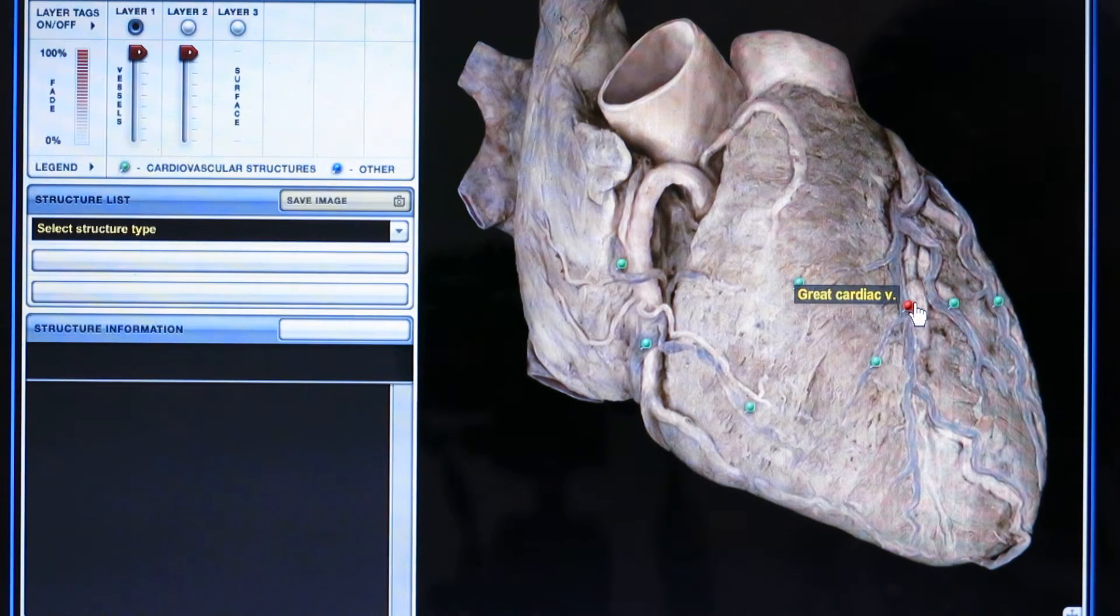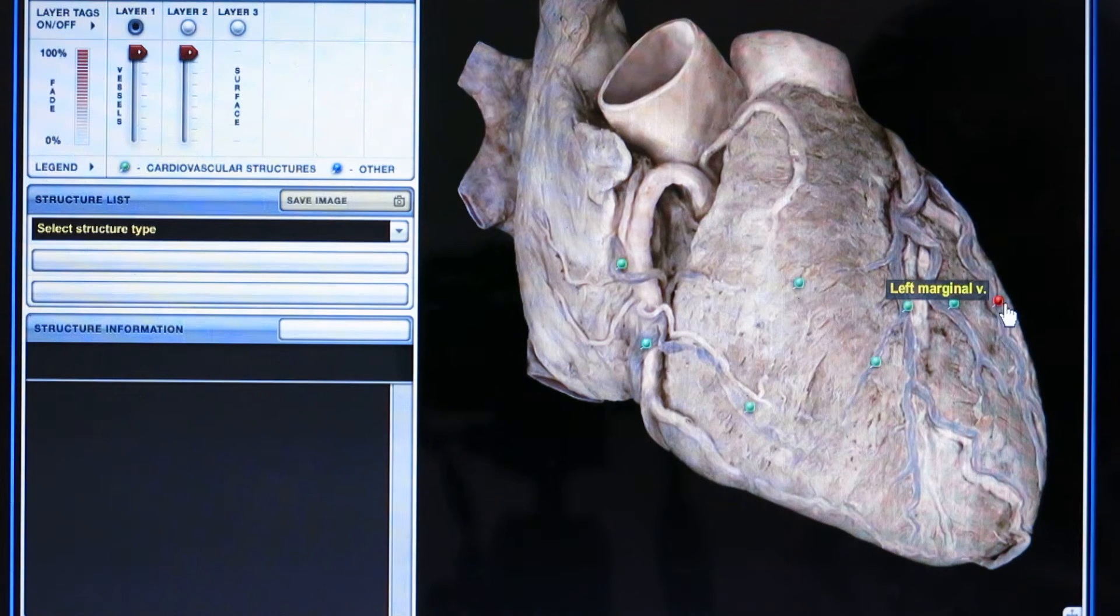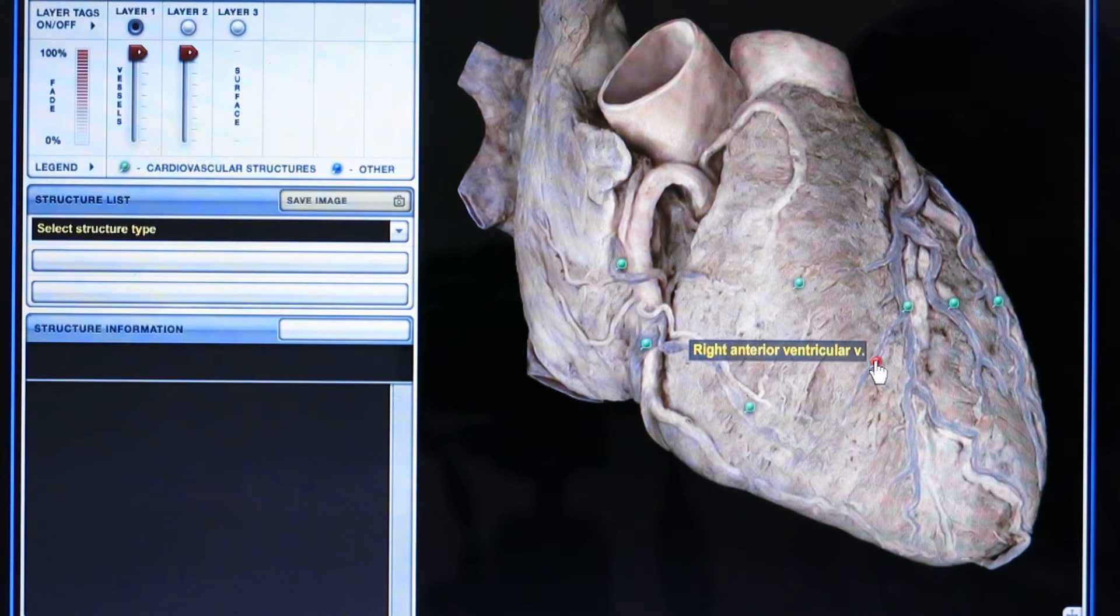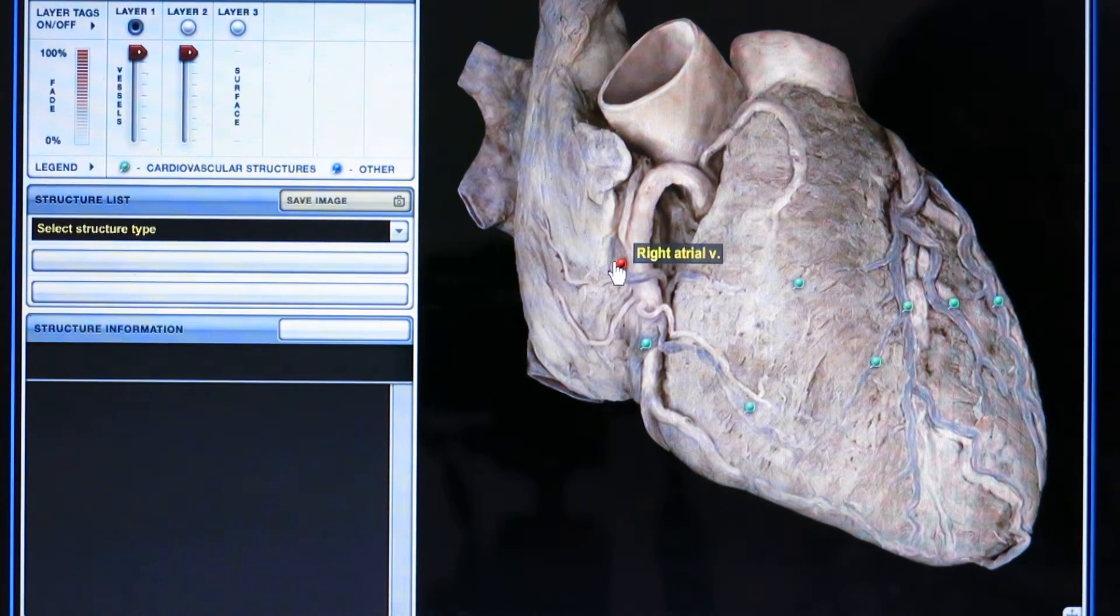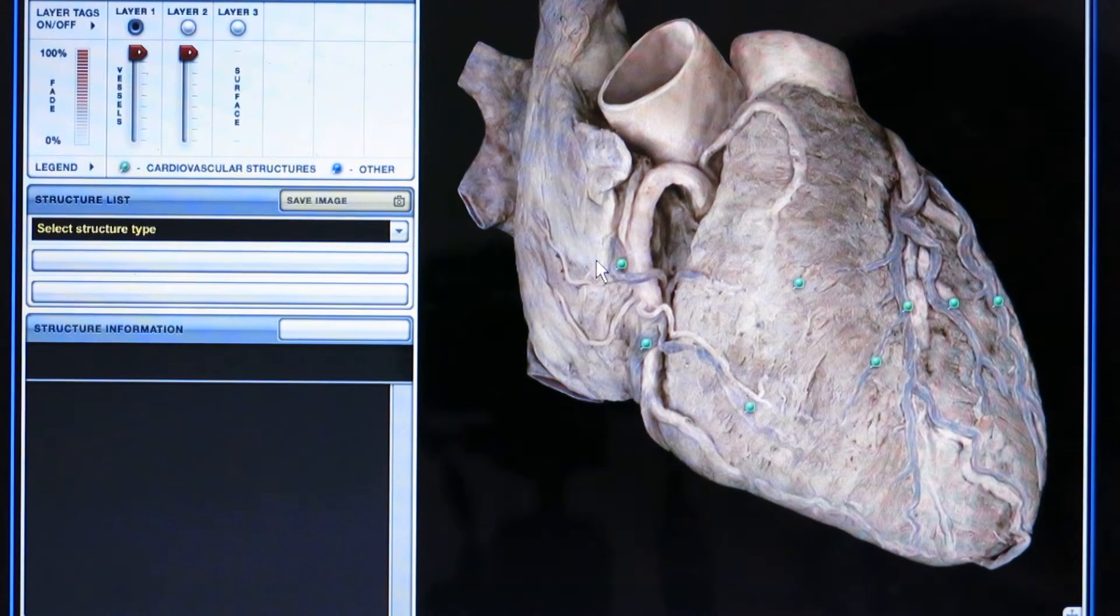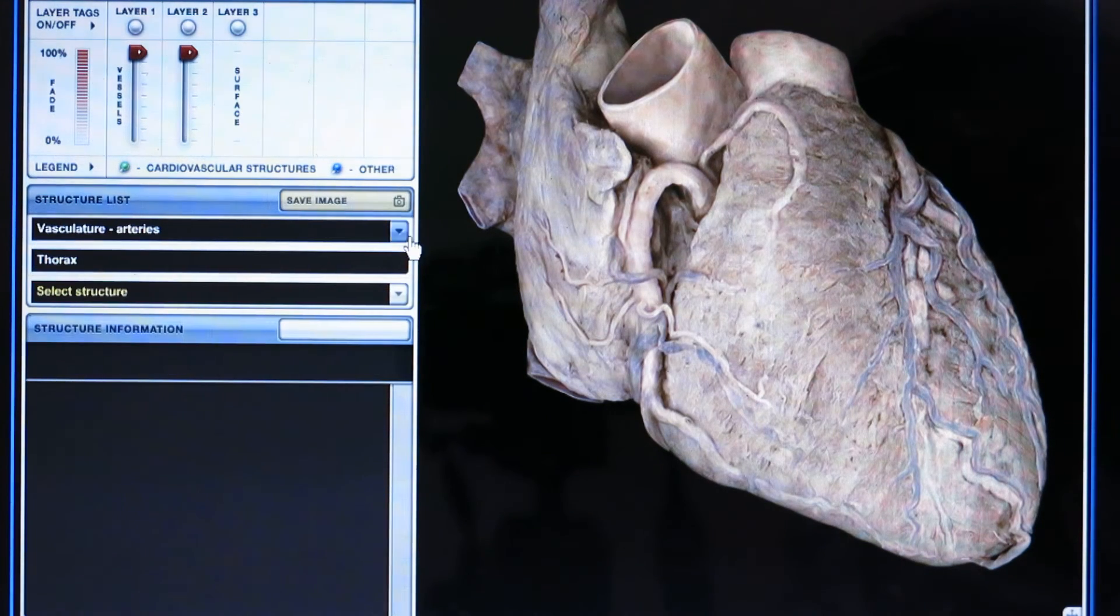This is the great cardiac vein, left anterior ventricular vein, left marginal vein, right anterior ventricular vein, right marginal vein, small cardiac vein, and right atrial vein. There are three arteries which supply the heart, which are called as: